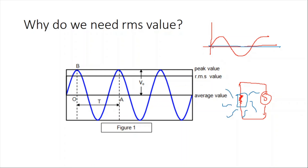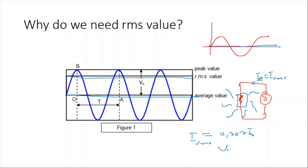If the average value is zero, mathematically we shouldn't get any heat energy from the current — but physically we do. This means there is an effective value of the current, called I_effective or I_RMS. So I_RMS ≈ 0.707 I₀ and V_RMS ≈ 0.707 V₀, where I₀ and V₀ are the maximum peak values.